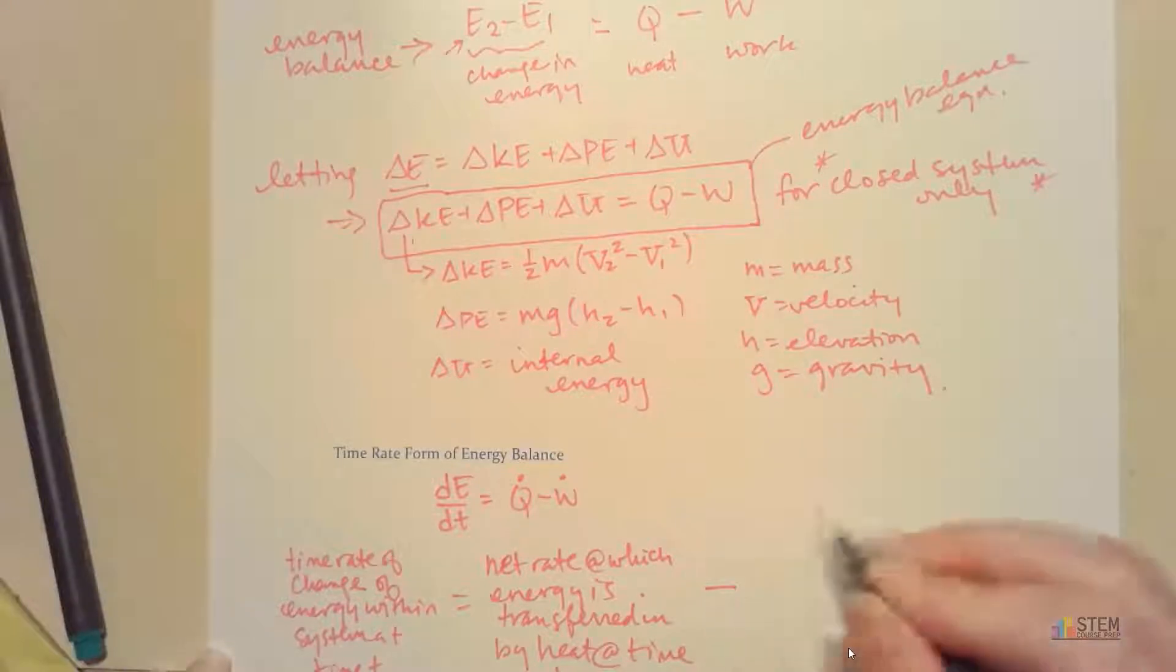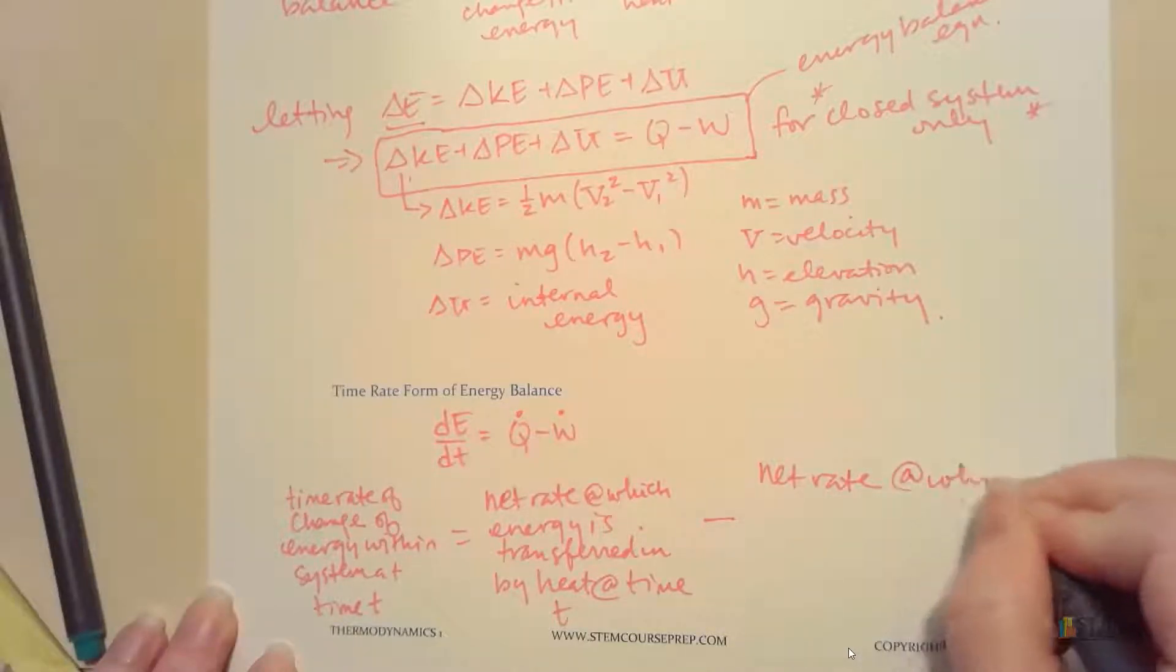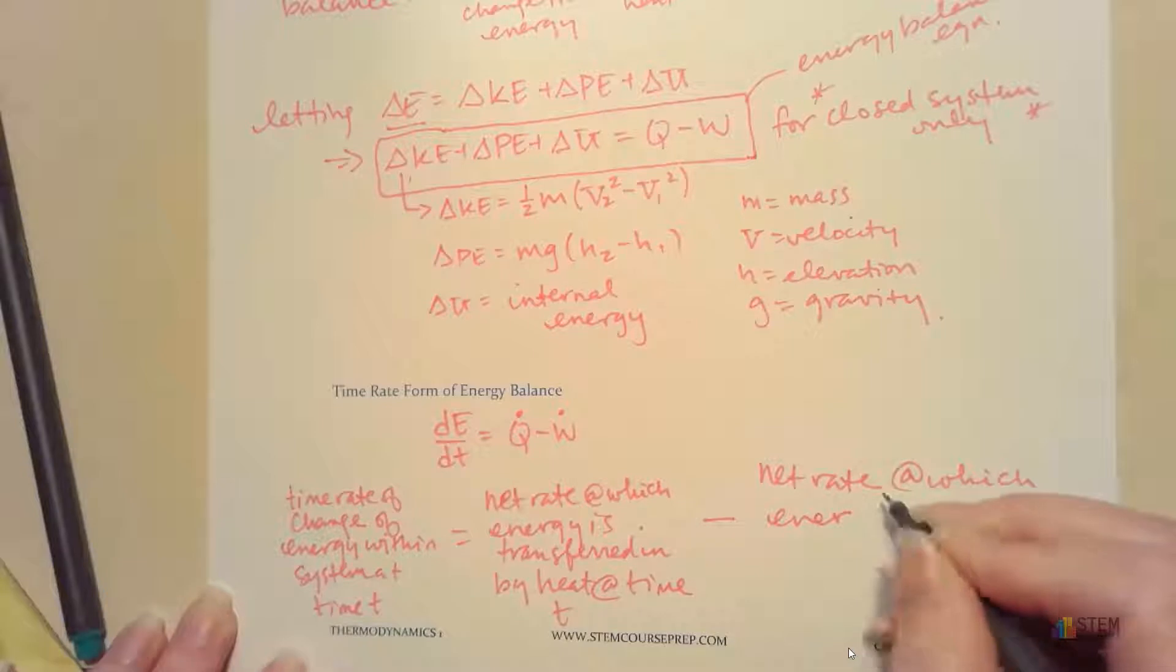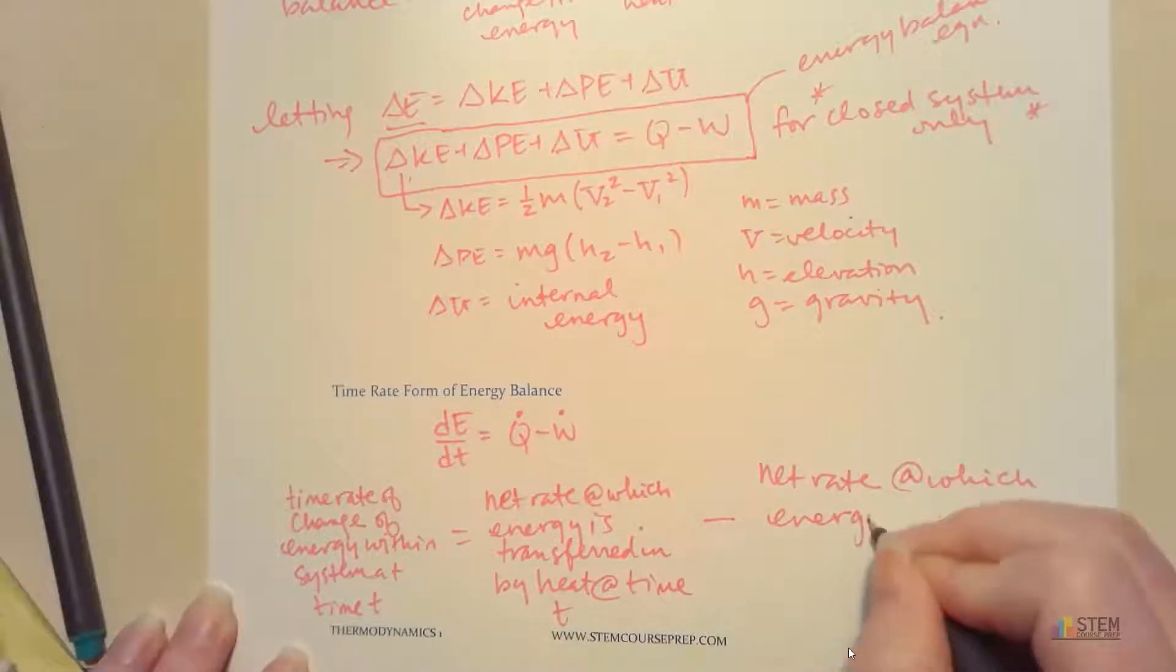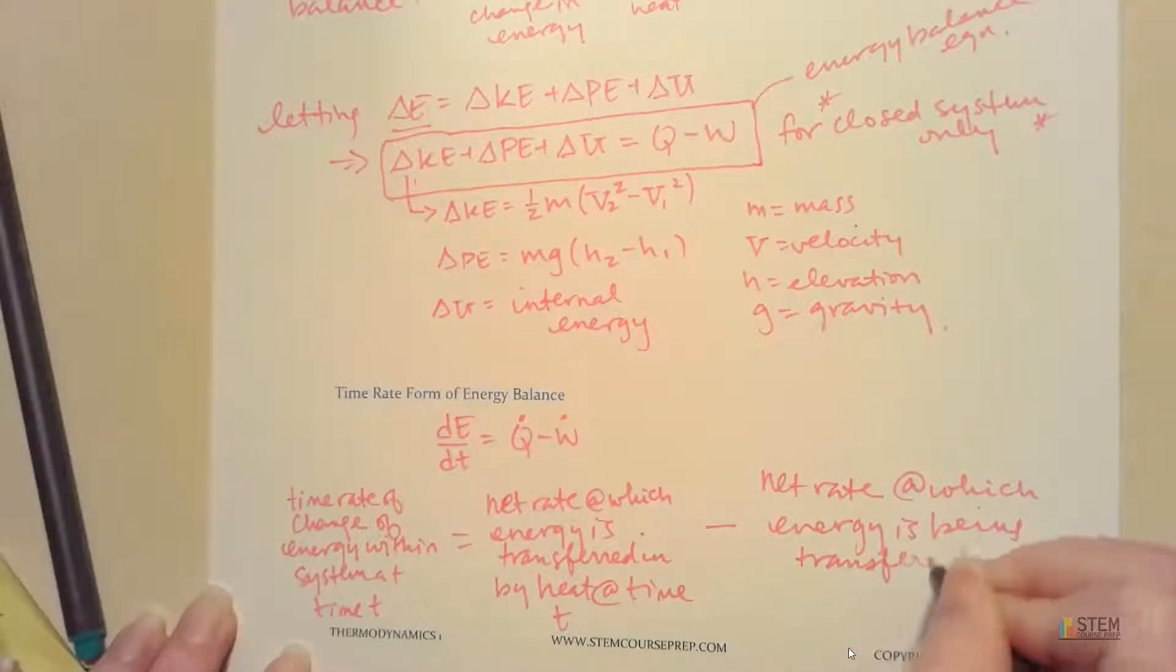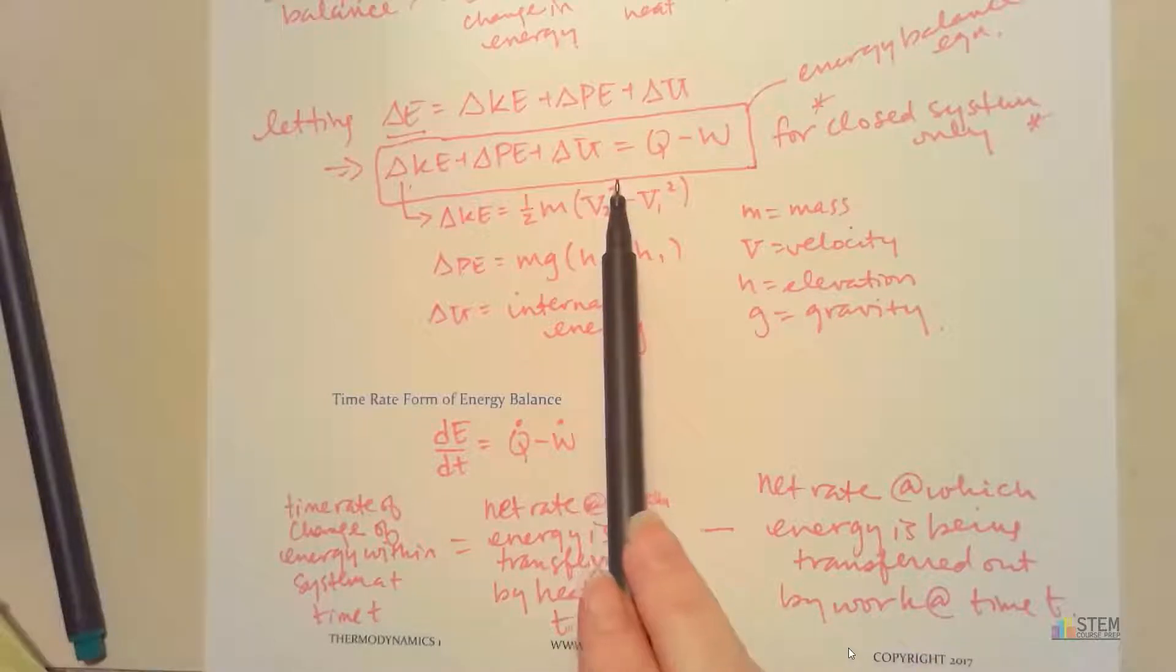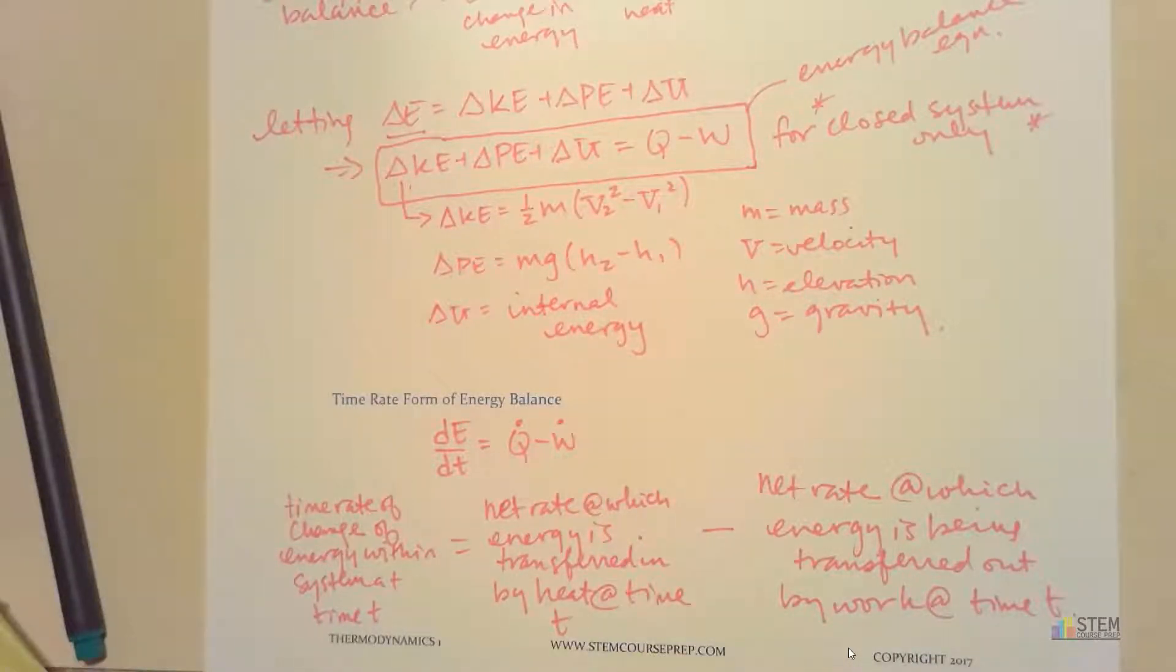That's going to equal the net rate at which energy is transferred in by heat at time T, and then we're going to subtract the net rate at which energy is being transferred out by work at a time T. So that's the time rate form of energy balance. We might see this one occasionally. Typically, we're going to use this one though. But this is the time rate form.